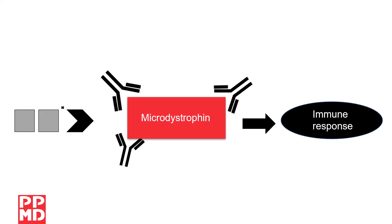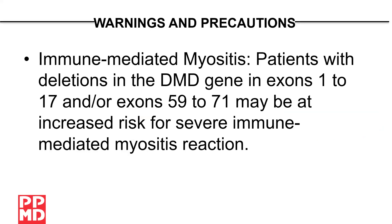Please note that this is specific to deletions. The FDA label also includes warnings, which the FDA says should identify and describe a specific set of side effects that are serious. To be in a warning, there should be reasonable evidence of the drug causing the side effect, but they don't have to be 100% certain. The warning on Alevitis is for deletions in exons 1 through 17 and/or exons 59 through 71, as deletions in these regions may be at an increased risk for a severe immune reaction causing muscle inflammation. Because many of the studies of gene therapies excluded people with variants in these exons, there is very little data about the safety of Alevitis with deletions in these regions.